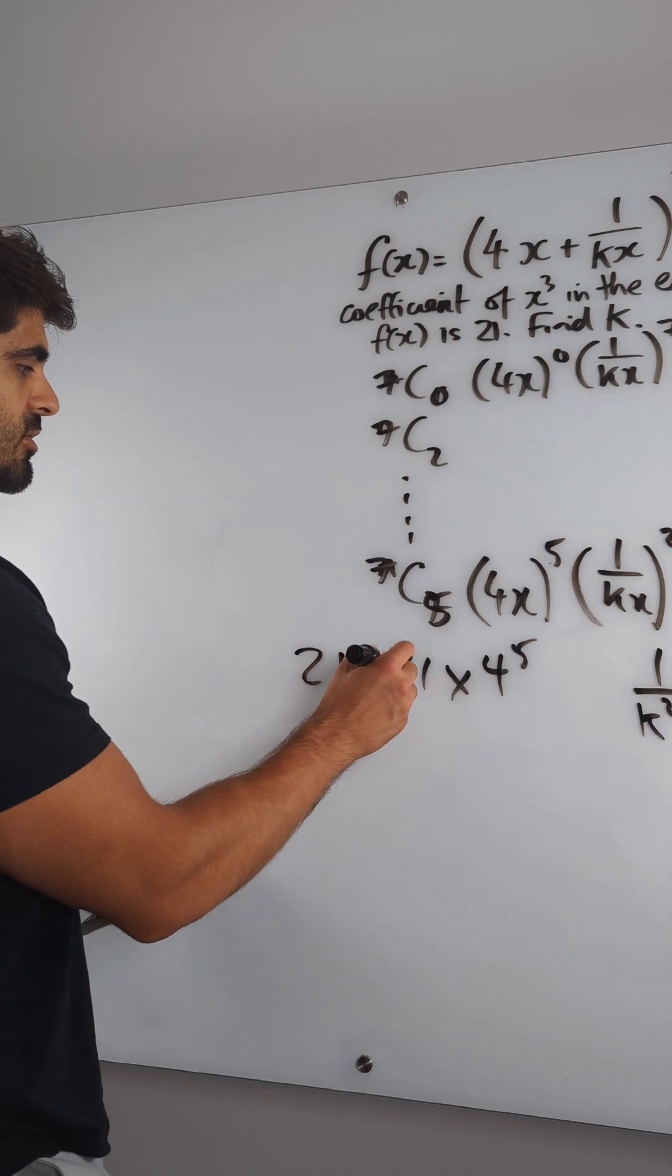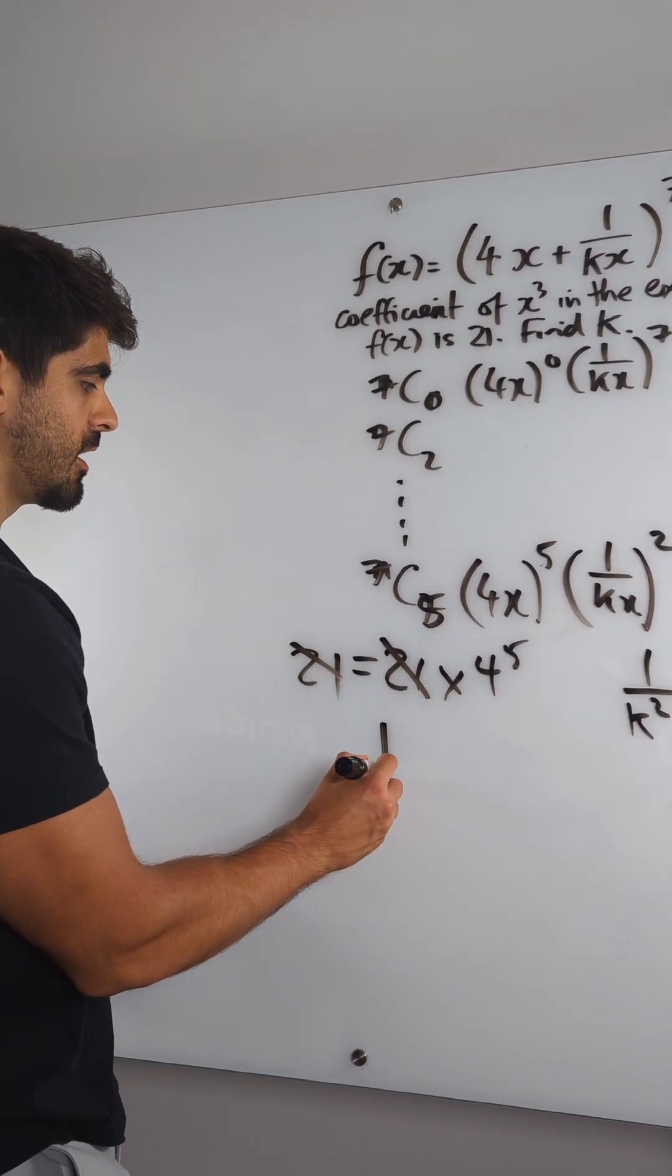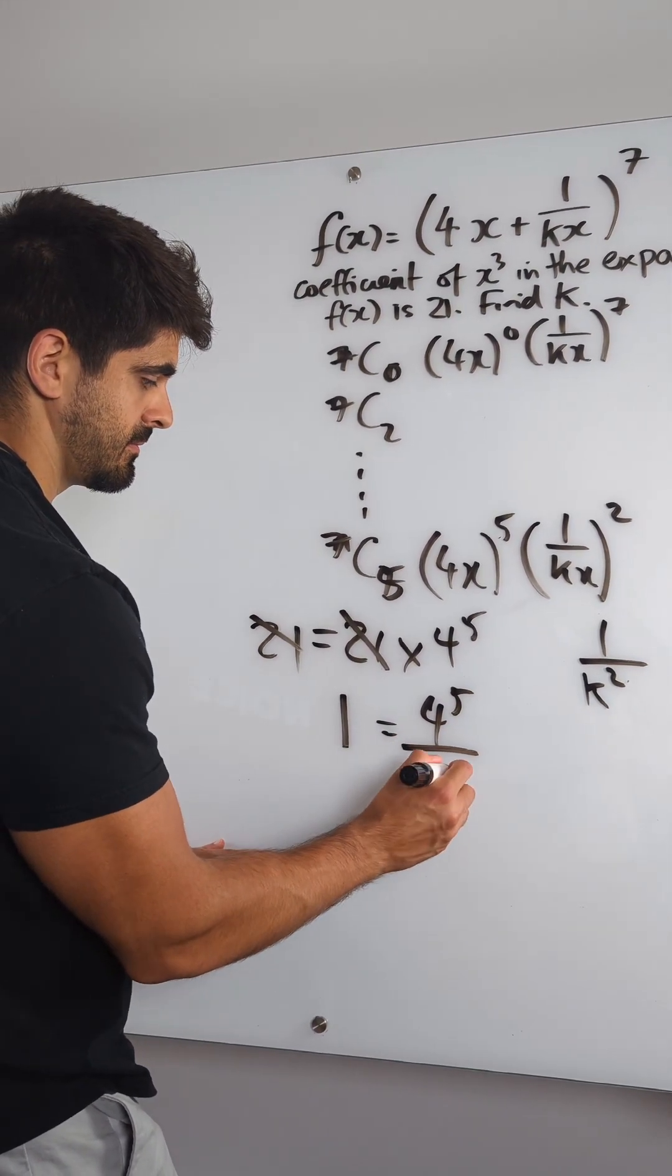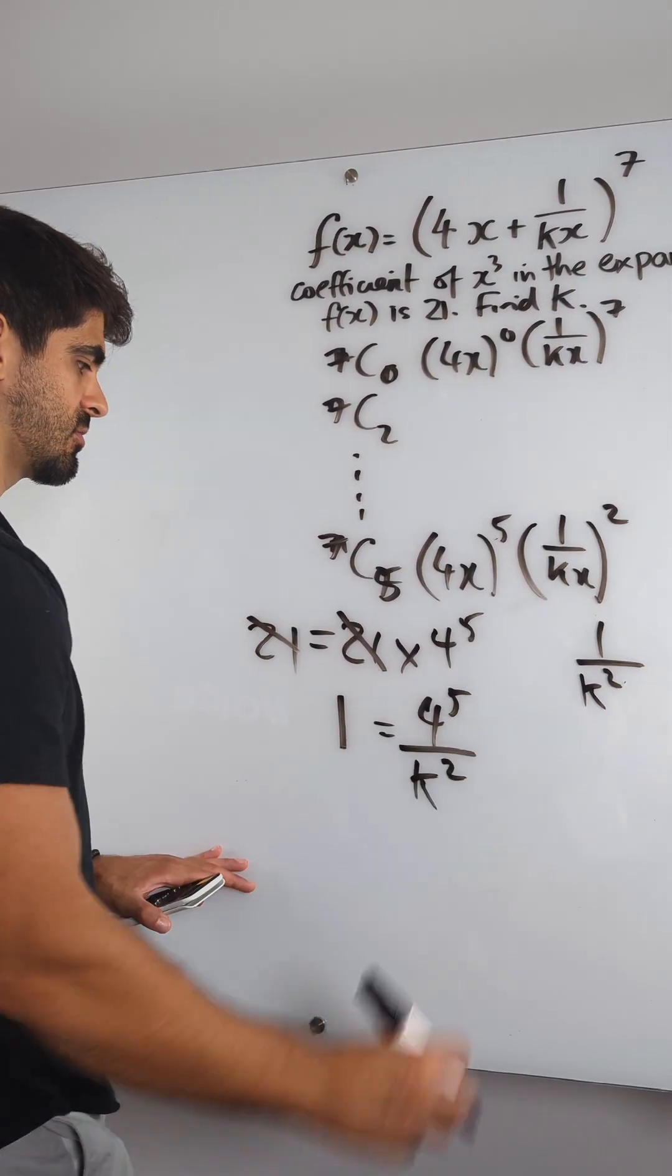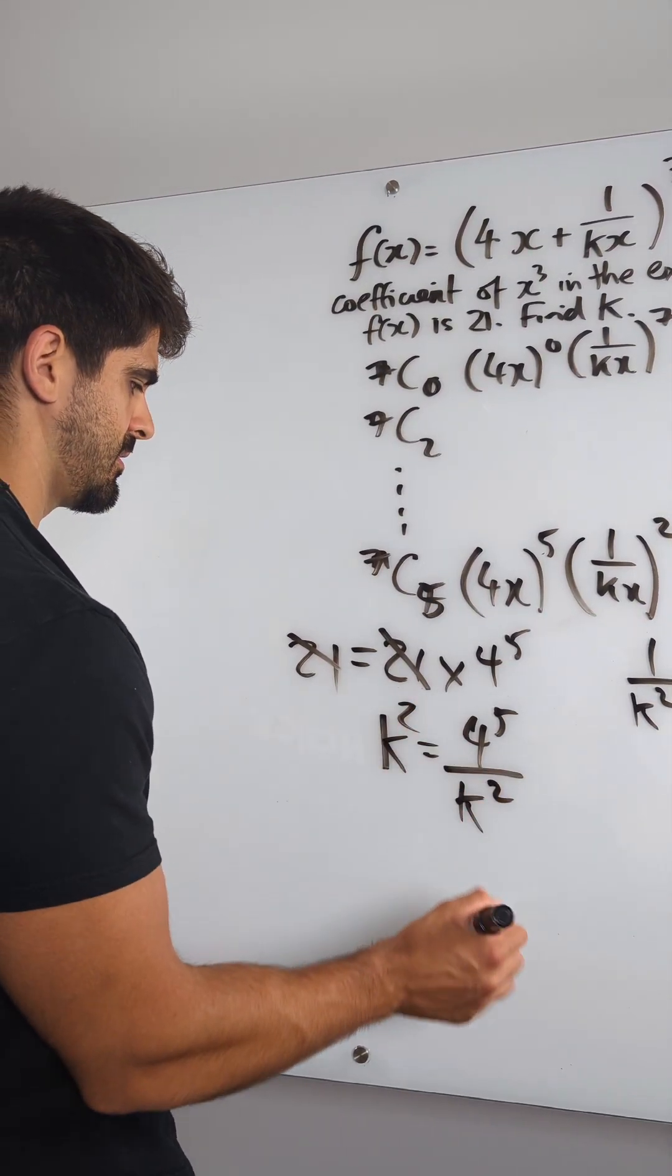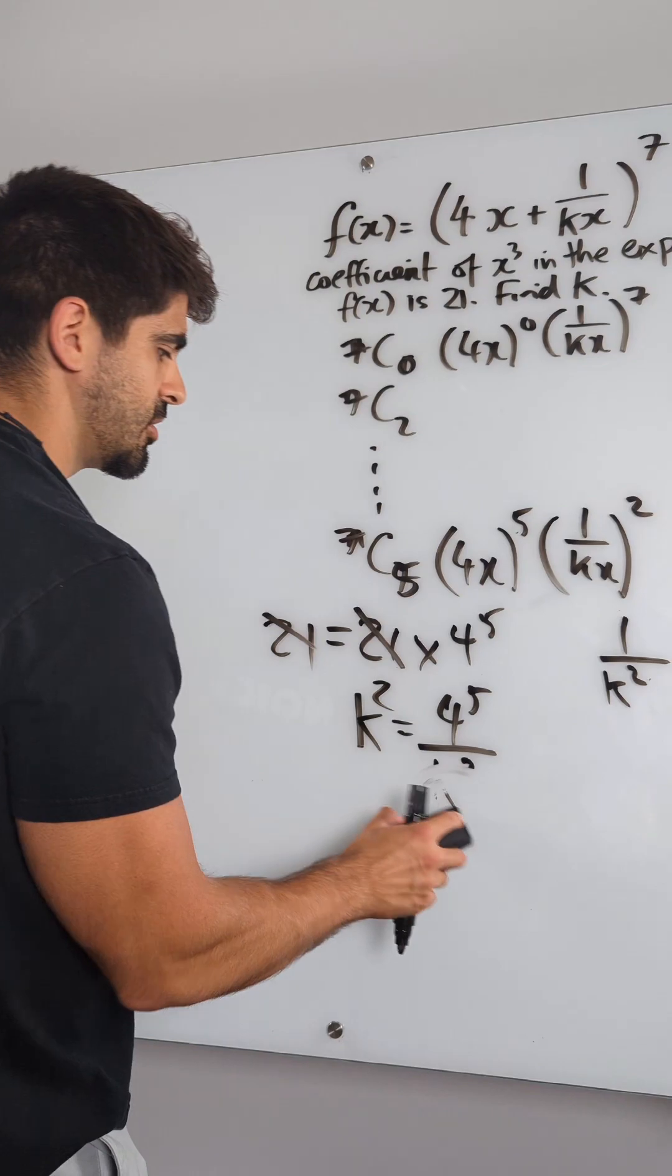That's nice. The 21's cancelled. So you're left with 1 is 4 to the power of 5 divided by k squared. Can I do this without a calculator? Yeah, I think so. Times 2 by k squared. Then you're going to root both sides.